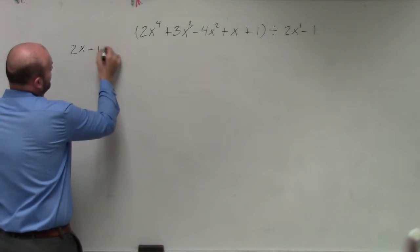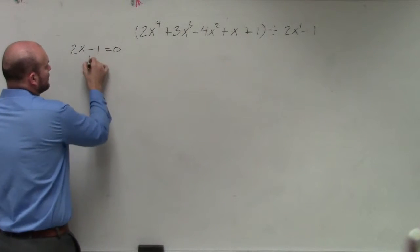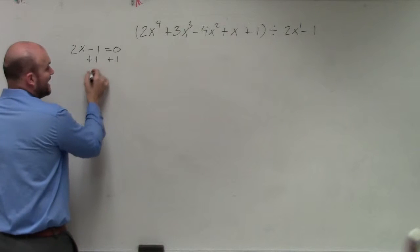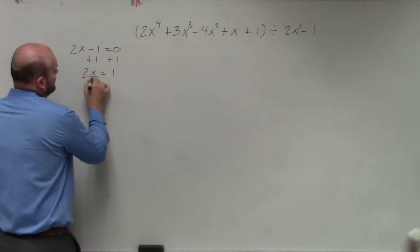So I have 2x minus 1 equals 0. To solve, I have to add 1 on both sides, then divide by 2.